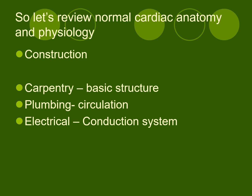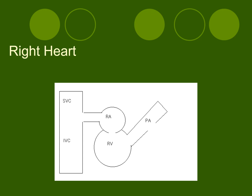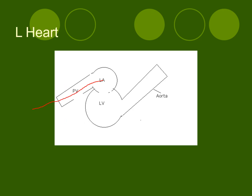Normal cardiac anatomy and physiology can be thought of in three analogies: carpentry is the basic structure, plumbing is the circulation, and electrical is the conduction system. In the right heart, the superior and inferior vena cavas dump into the right atrium, through the tricuspid valve into the right ventricle, out through the pulmonic valve and pulmonary artery to the lungs. After oxygenation, blood returns through the pulmonary vein into the left atrium — through the mitral valve into the left ventricle, and out through the aortic valve into peripheral circulation.